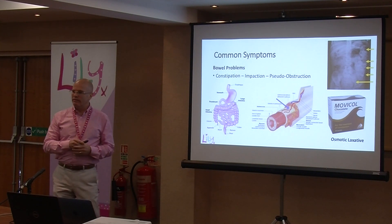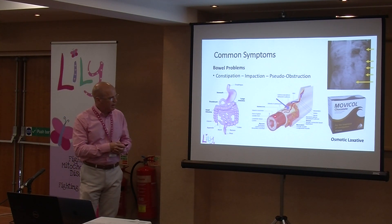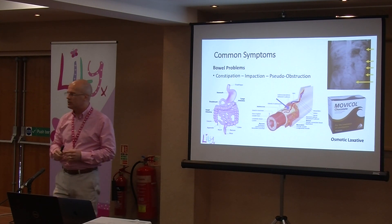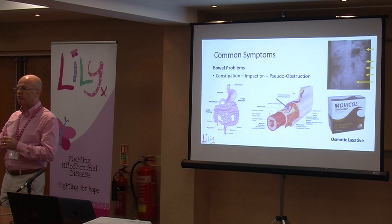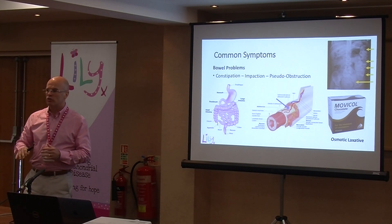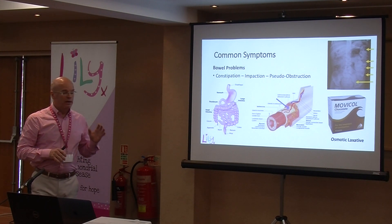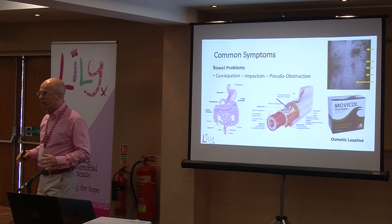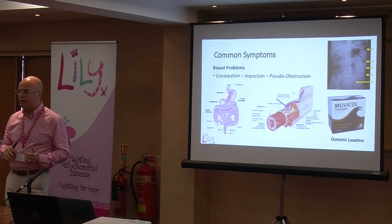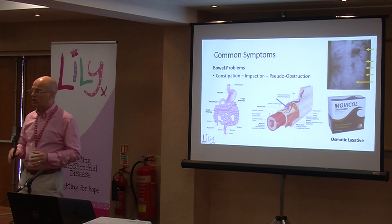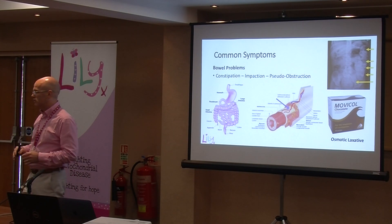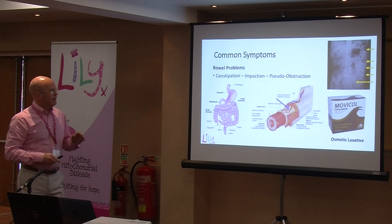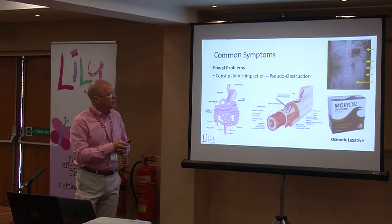The gut is also a muscle — in fact, there are several layers of muscle, orientated in different ways around the gut, and that muscle helps propel food and waste products through. Muscle, as we know, is packed with mitochondria. And if the mitochondria aren't working, that muscle isn't getting its energy supply to do the job it needs to do. So the gut becomes a slow motor — it doesn't move in the way that it should.